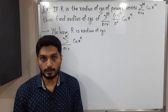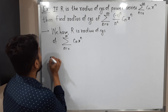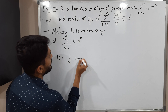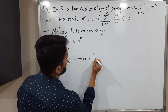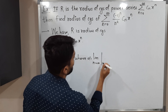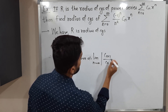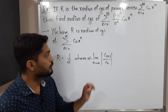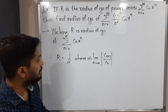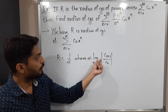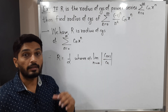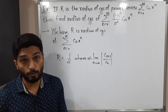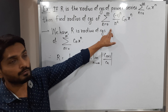We are familiar with the formula for radius of convergence: R is equal to 1 by α, where α is calculated as the limit as n tends to infinity of |cₙ₊₁ / cₙ|. We find the limit of this ratio, which is α, and the reciprocal of α is the radius of convergence.